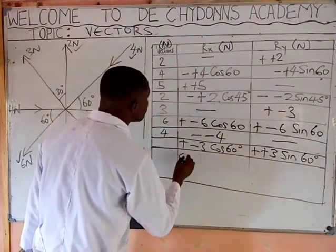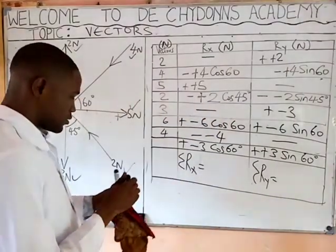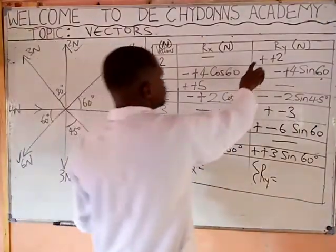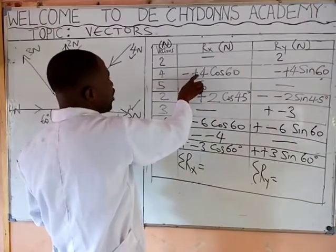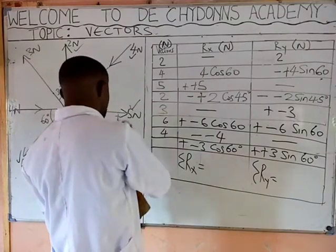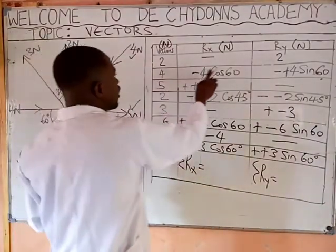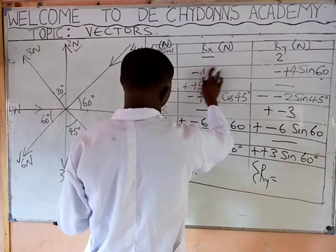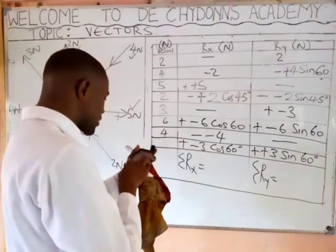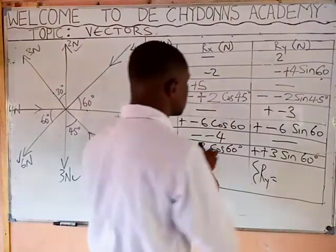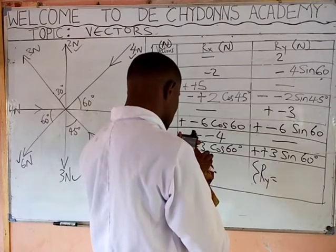Now write the summation of arrow x and summation of arrow y. Bring out your calculator. Plus times plus gives plus, so that gives positive 2. Minus times plus gives minus — write minus. Cosine 60 gives 0.5, so 4 times 0.5 gives 2, making that minus 2. Then minus times minus gives plus, and minus times plus gives minus: 4 sin 60 gives 3.464.